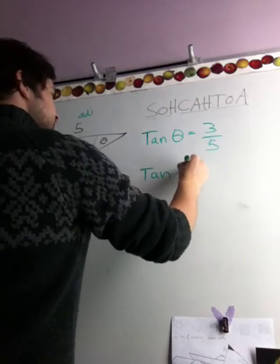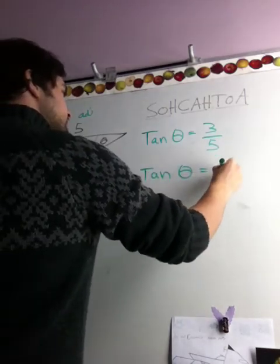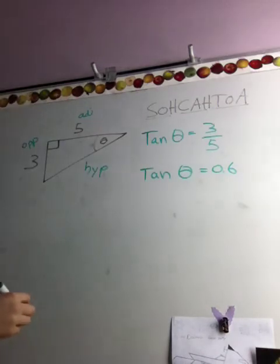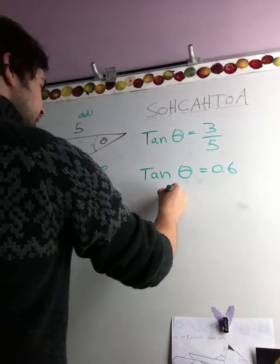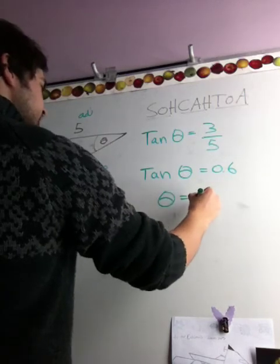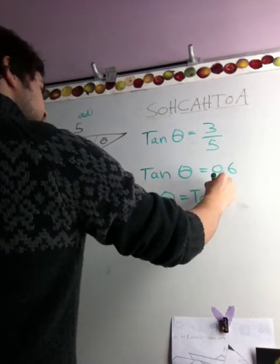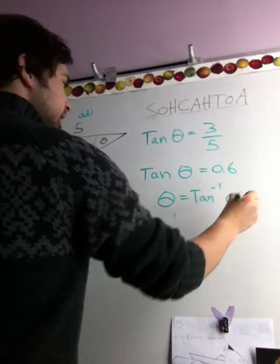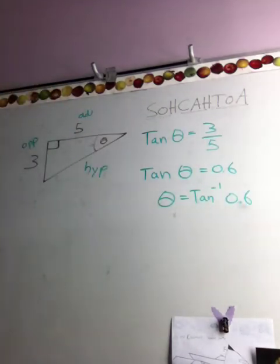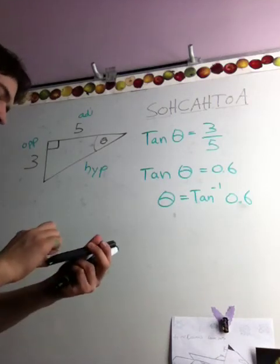So we don't want fractions, we want decimals. Now, tan. We get that out of there by moving it to the other side of the equation and putting a negative one on it. The shift version of tan. So now, just one last step.